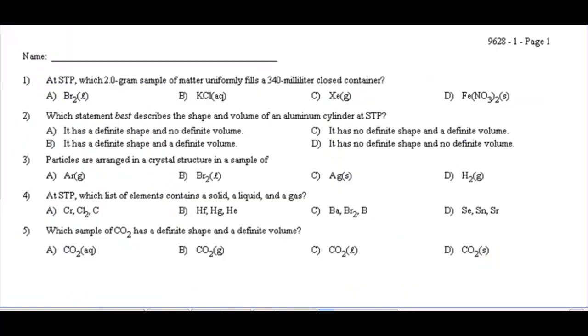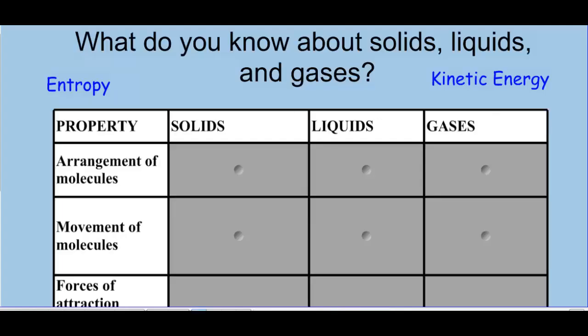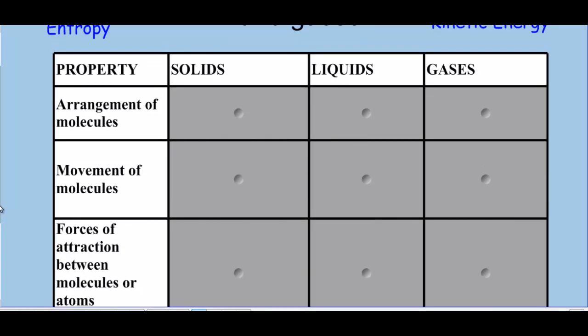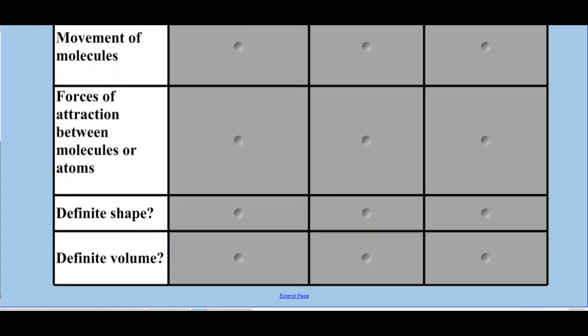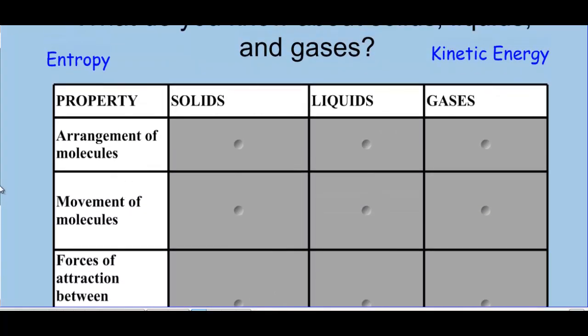Now, what are their properties then? So let's talk about the arrangement of molecules or atoms, the movement, the forces of attraction, and whether or not they have a definite shape or volume. And I know much of this will be review from like 7th or 8th grade whenever y'all did physical science. So arrangement of molecules, and I'm going to say or atoms. We'll talk about the difference between those two terms as well. But solids are arranged very regularly. They're the only phase of matter that has a regular geometric arrangement, and we call that geometric arrangement a crystalline structure. They are packed tightly together. The atoms in the solid phase are tightly packed.